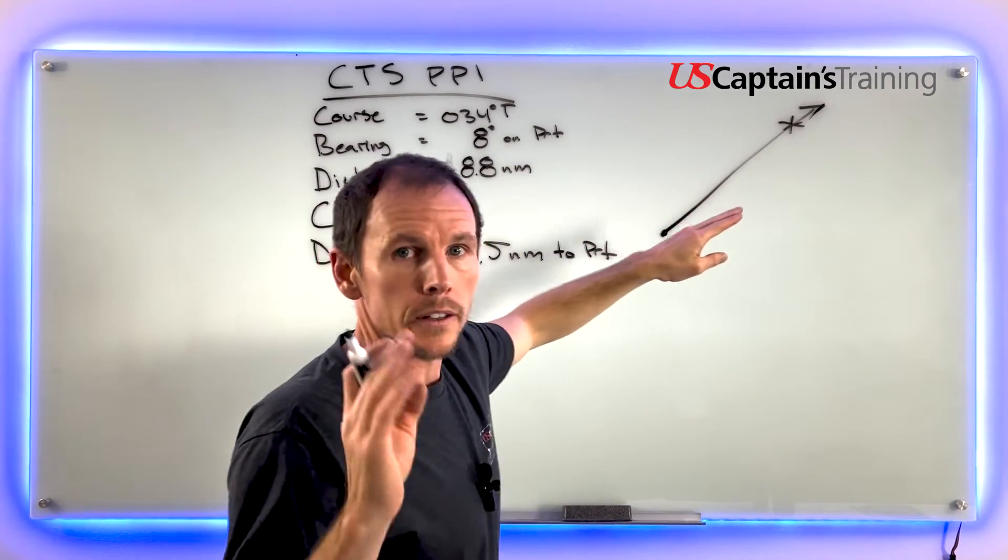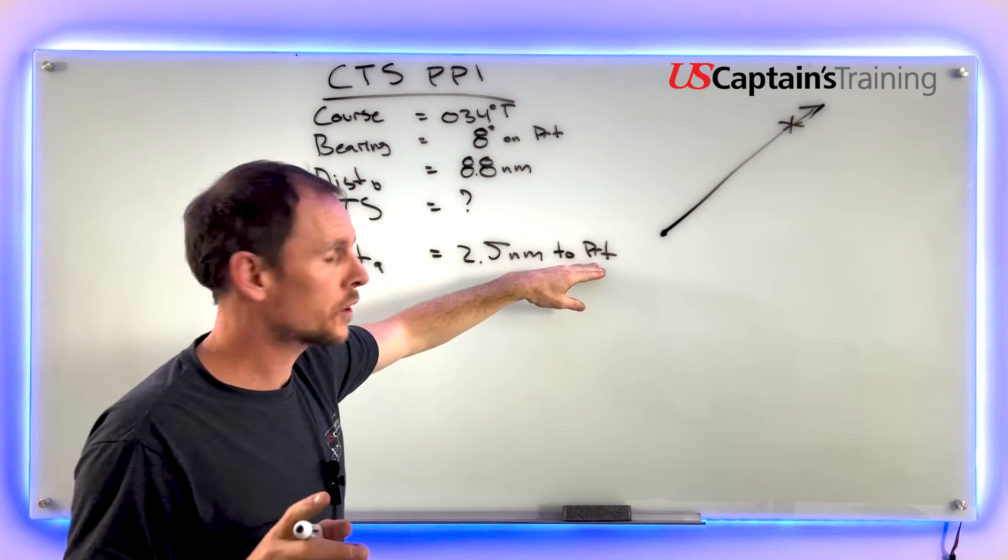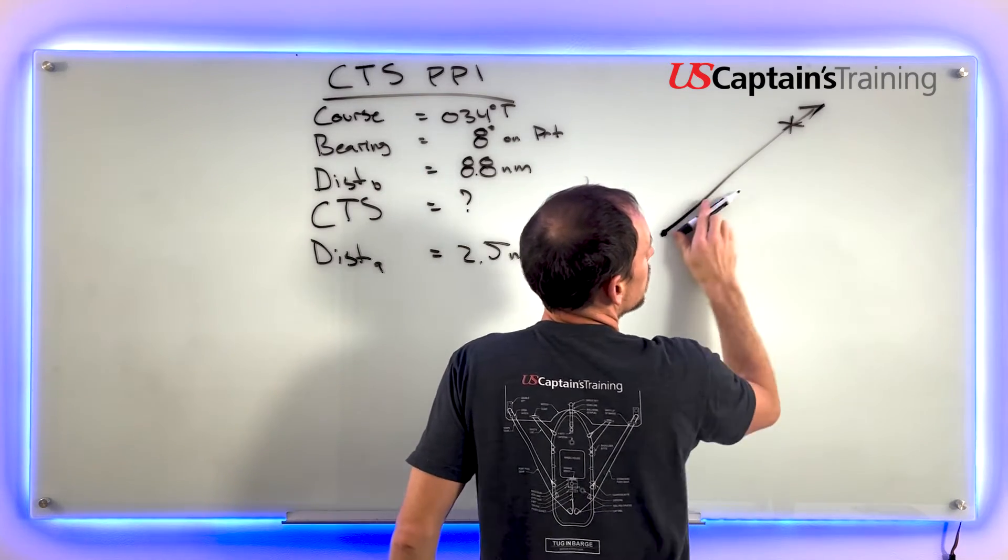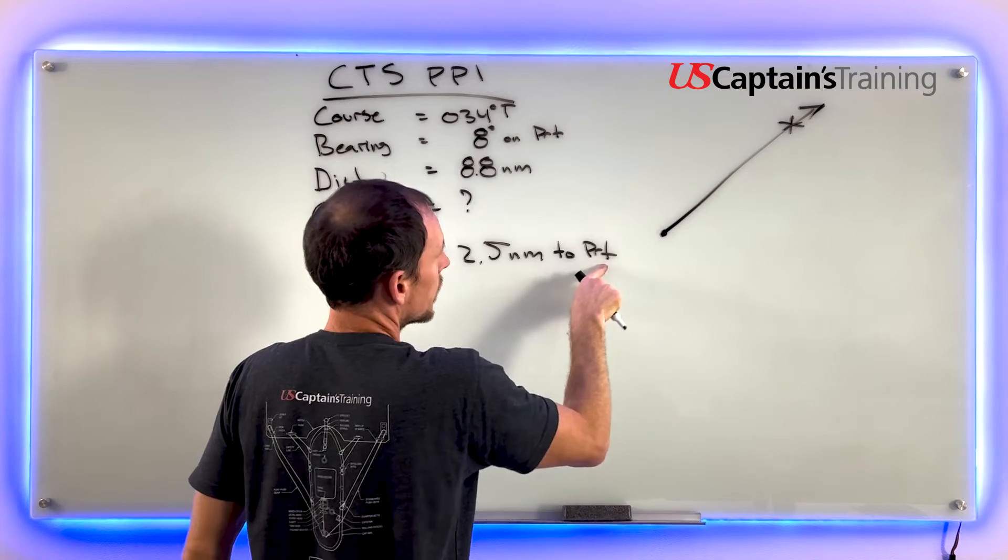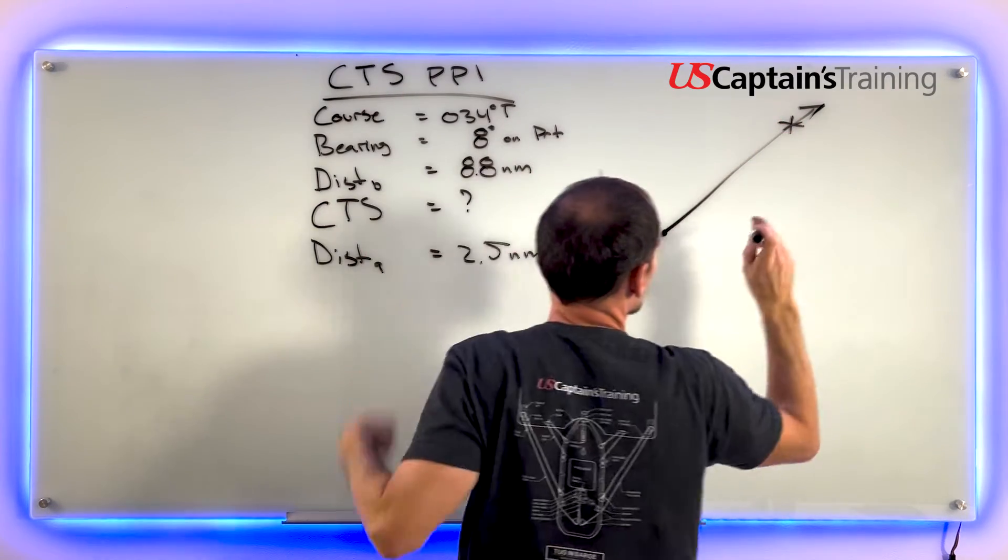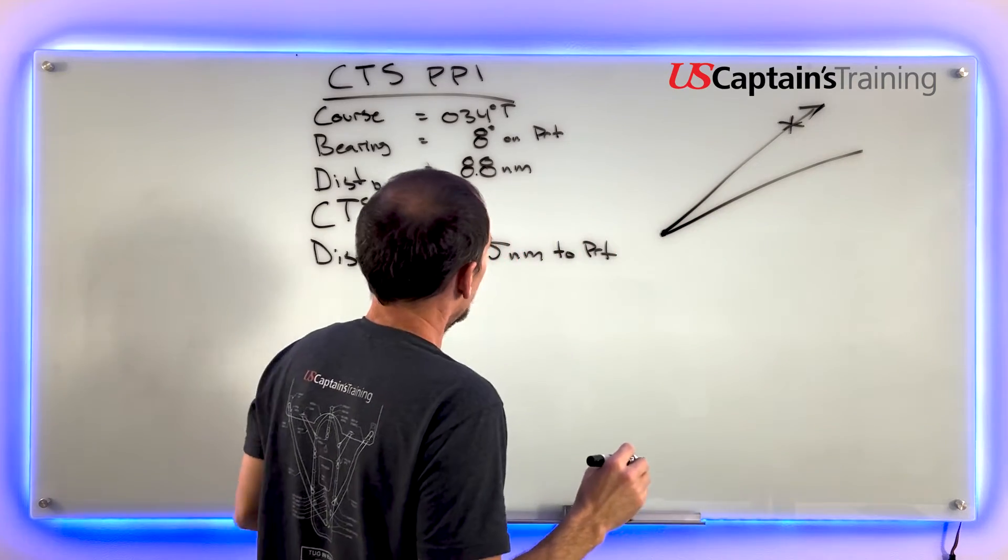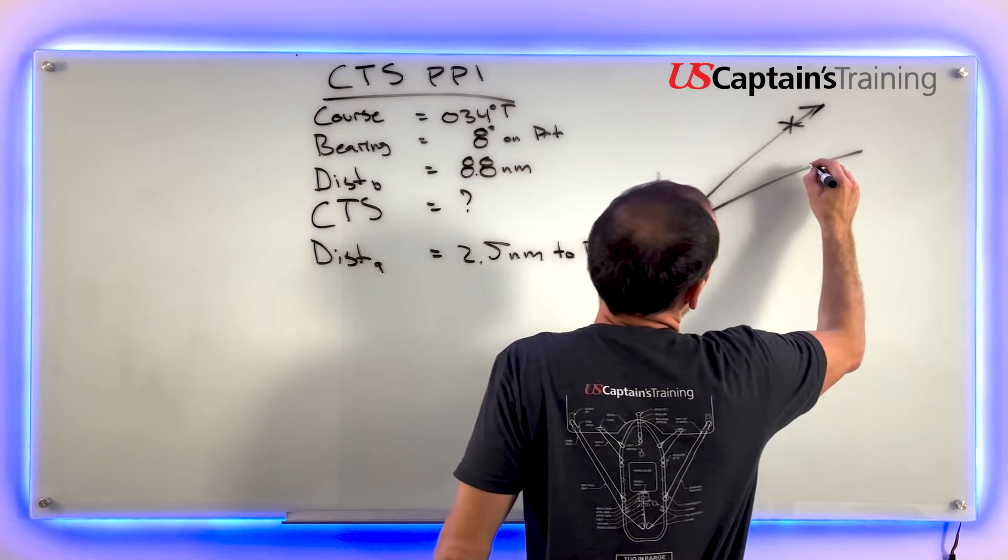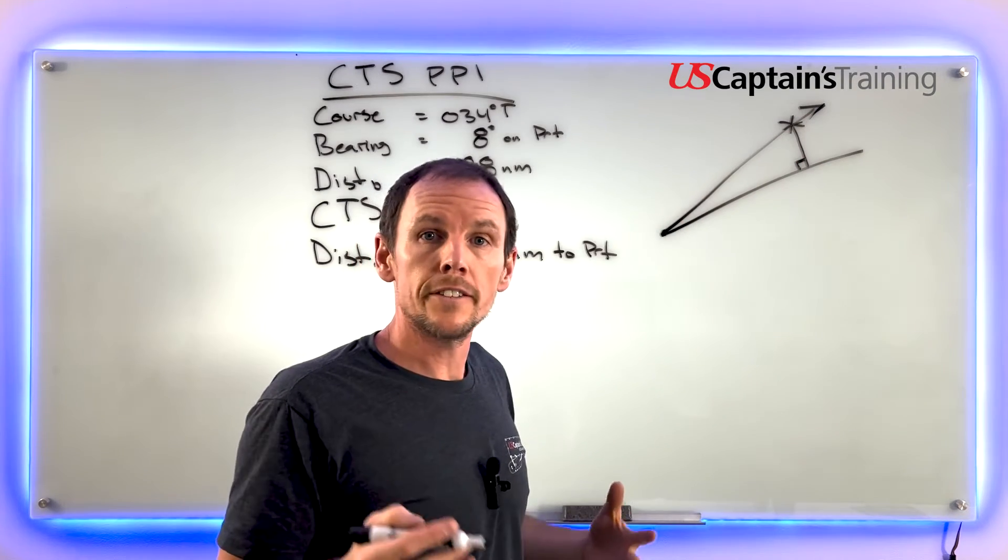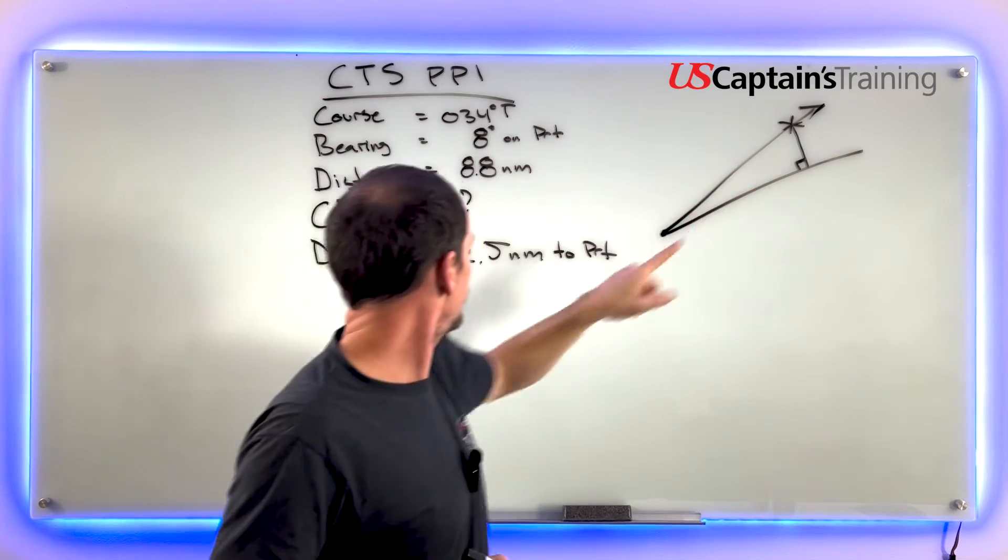This is us and we sight the light. We want to leave the light to port - 2.5 miles to port means we have to be here. If we're leaving it directly abeam to port, that means this is a right angle.